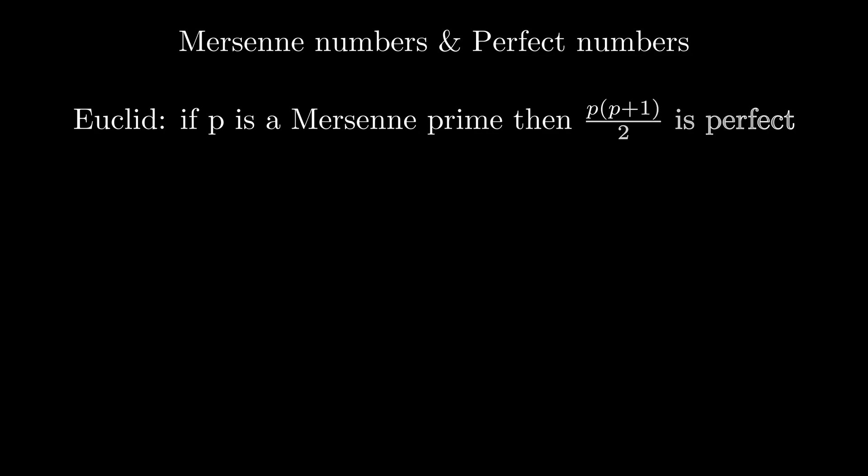And almost 2000 years later, Euler proved the opposite. Any even perfect number will be of this form. We come so close to creating a sequence with infinitely many primes, but again there is a limitation.